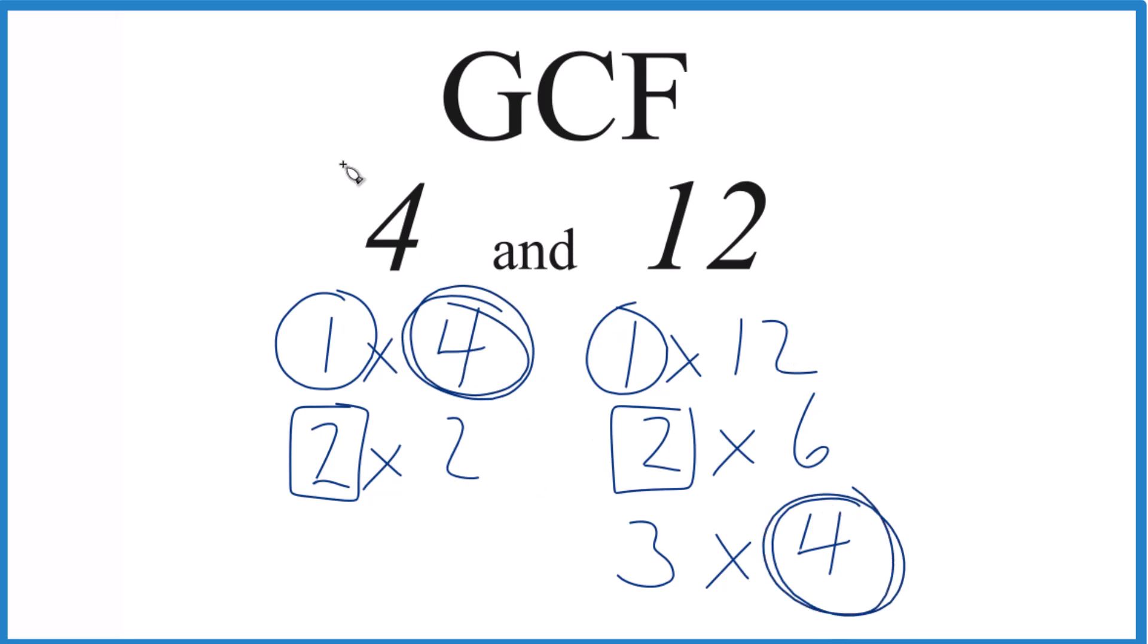So 4, that's the greatest one that shows up. 4 goes into 4 evenly and 4 goes into 12 evenly. So that's the greatest common factor for 4 and 12. It's 4.